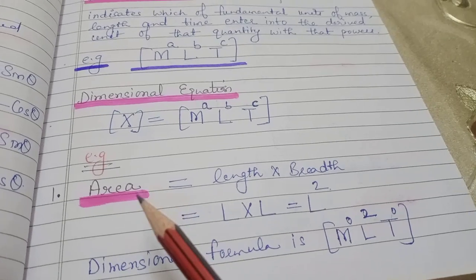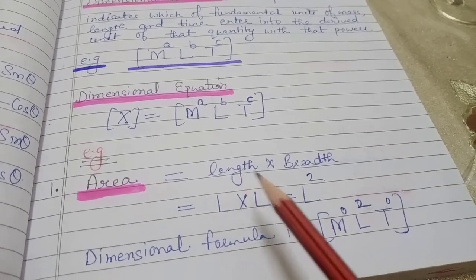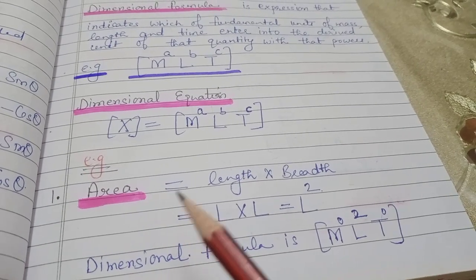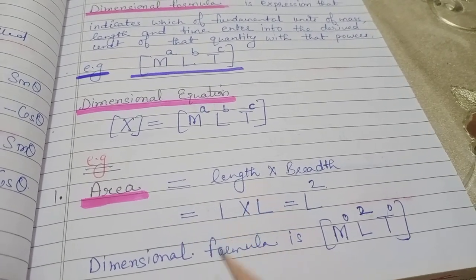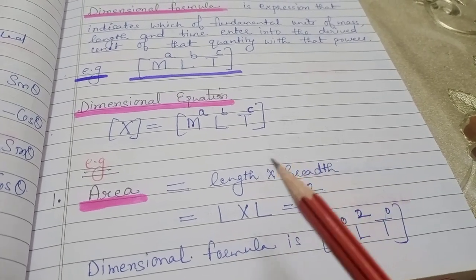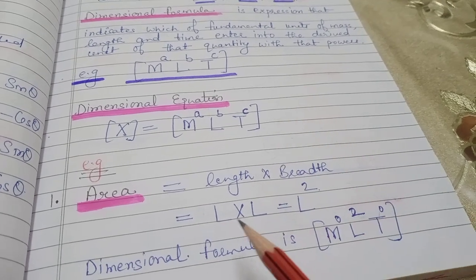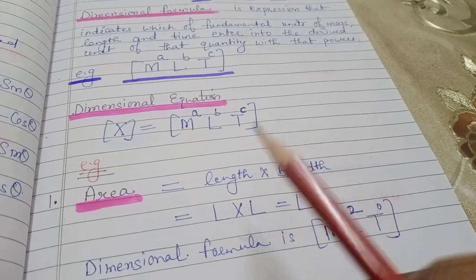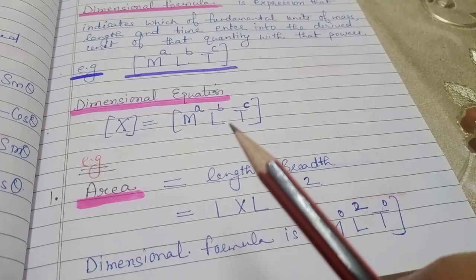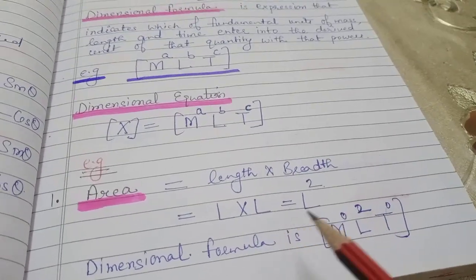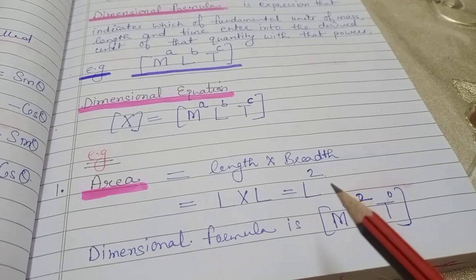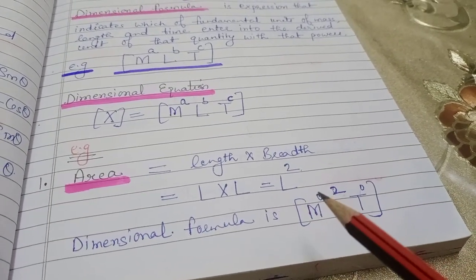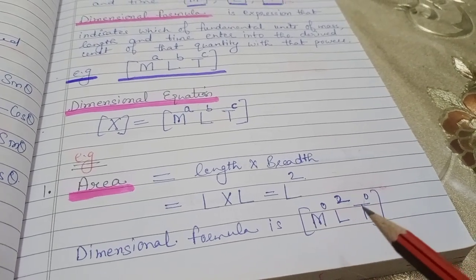सबसे easy physical quantity — area। Area का formula क्या है? Length गुना breadth। अब हर formula को M, L, T की form में लिखना है। Length एक distance है — L लिखा। Breadth भी एक distance है — L। ना वो mass है, ना वो time है। तो L की power 2 होगी। Dimensional formula: mass कोई term नहीं है तो M⁰, L की power 2, T की power 0 — यानी [M⁰L²T⁰]। This was area।